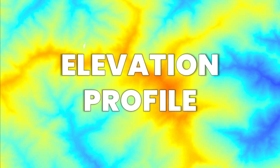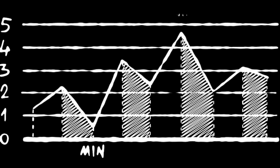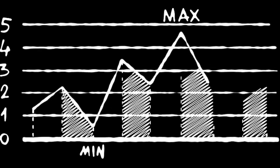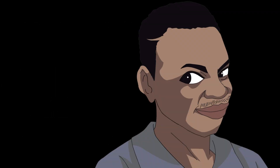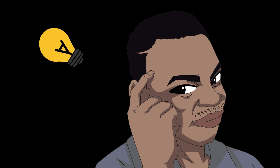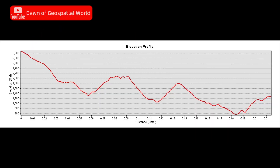An elevation profile provides a visual representation of the terrain along a specific route or path. It displays the changes in elevation over the distance covered, allowing individuals to understand the overall topography of the area. The horizontal axis represents the distance travelled while the vertical axis represents the elevation. The profile line or curve shows the fluctuation of elevation along the route.